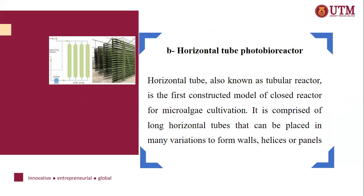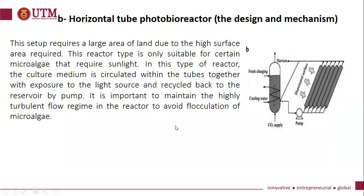The second type is the horizontal tube photobioreactor. Horizontal tube, also known as tubular reactor, is the first constructed model of closed reactor for microalgae cultivation. It is comprised of long horizontal tubes that can be placed in many configurations to form walls. It should be placed in a large area of land due to the high surface area. This reactor type is only suitable for certain microalgae that require sunlight, and the culture medium is circulated within the tubes. The diameter of the tube can be smaller due to the long distance for light permeability from the light sources to the culture liquid.